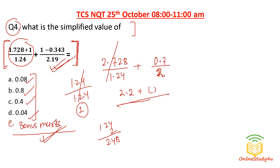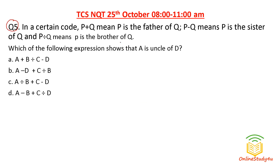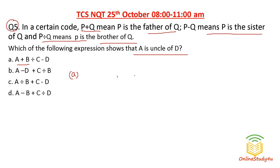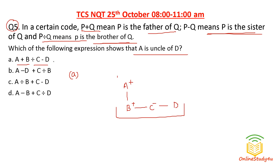Question five was a blood relations coding question from reasoning. In a certain code: P+Q means P is the father of Q; P−Q means P is the sister of Q; P÷Q means P is the brother of Q. Which expression shows A is the uncle of D? Checking option A: A+B means A is the father of B; B÷C means B is the brother of C; C−D means C is the sister of D. Here B, C, D are children of A, so A cannot be uncle — option A is wrong.